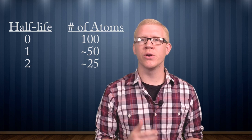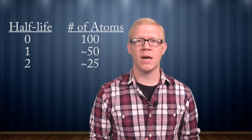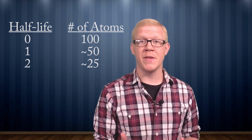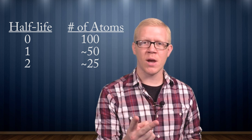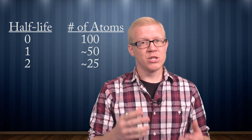For example, if you start off with 100 carbon-14 atoms, you will be left with about 50 atoms after one half-life, and about 25 atoms after two half-lives. So by knowing how much carbon-14 the living organism had, and by determining how much is left in its fossils, one can calculate how much has decayed away, and therefore how old the fossil is.